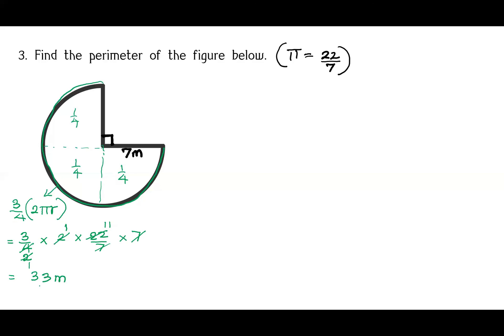So 33 meters is the length of this curve. The radius is 7, and here it is also 7. So the perimeter will be 33 + 7 + 7, and this gives us 47 meters.